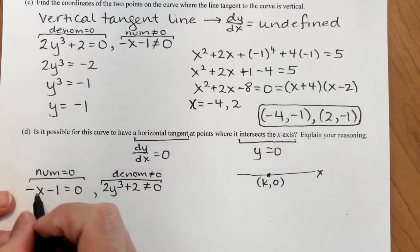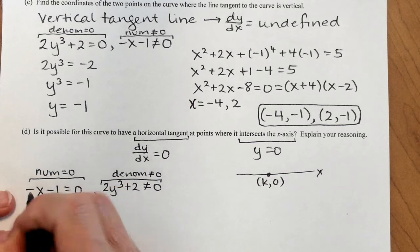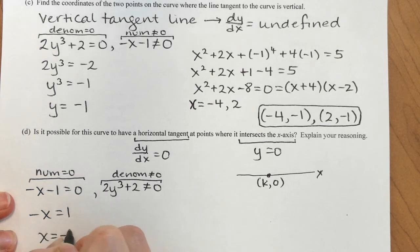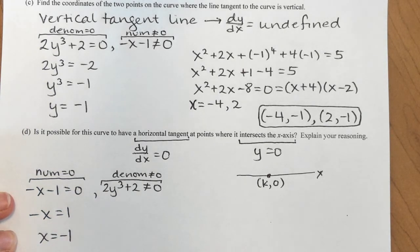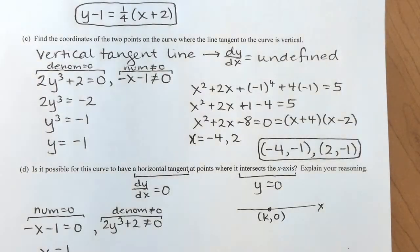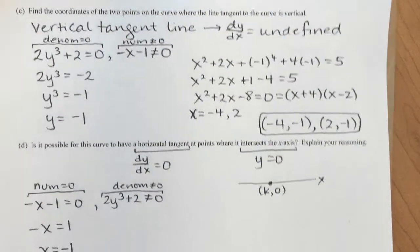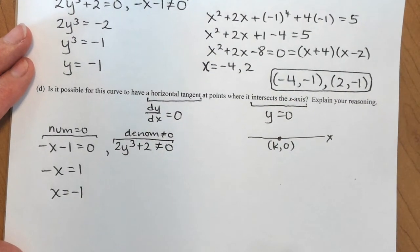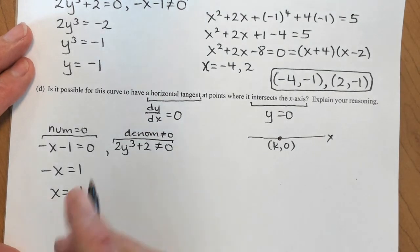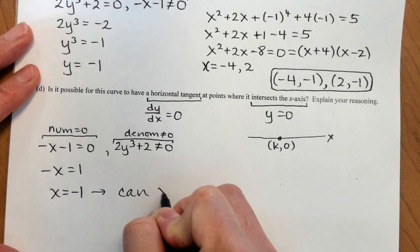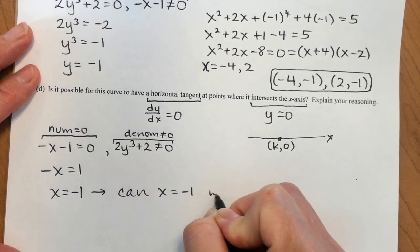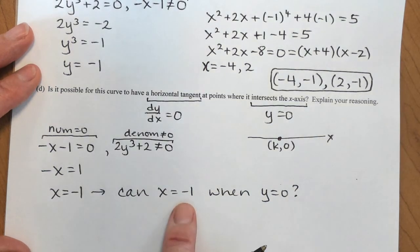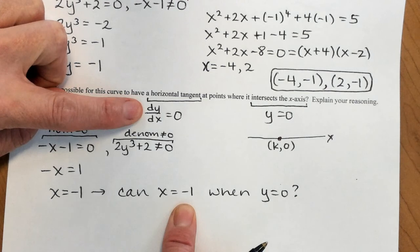The numerator equals 0 when x equals negative 1. We already found those points — that does not make the denominator 0. So we want to know: can x equal negative 1 when y equals 0? When x is negative 1, the slope of the tangent line is 0. Can this occur at a point on the x-axis?